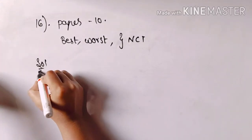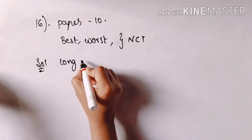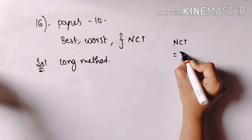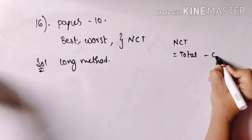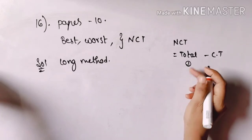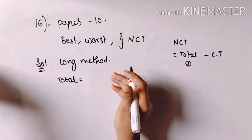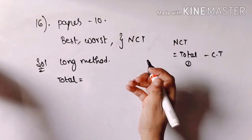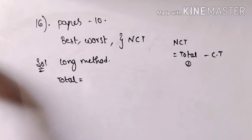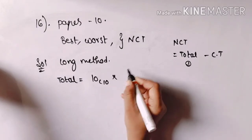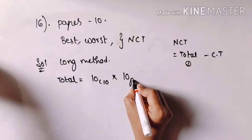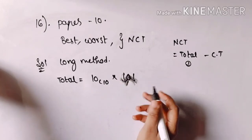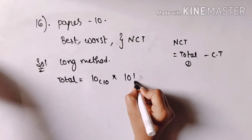But now for the long method: the 'never come together' formula is total minus come together. The total is different — any papers are different, ten papers are different. So total is 10C10 into 10 factorial, and 10P10 is used — or simply 10 factorial.